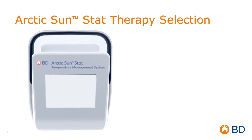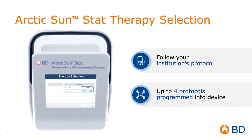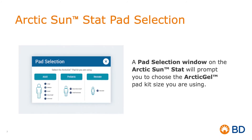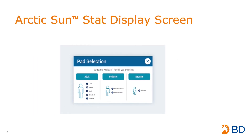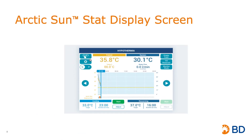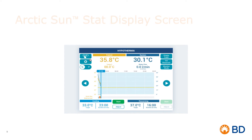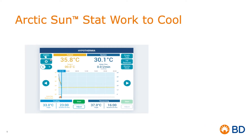The Arctic Sun STAT Temperature Management System stores up to four protocols in your device. When initiating therapy, select the protocol ordered, then choose the Arctic Gel Pad Kit Size for the patient being treated. The display screen shows patient information in yellow and water information in blue. The dotted yellow line is the goal of therapy as programmed according to your hospital protocol.